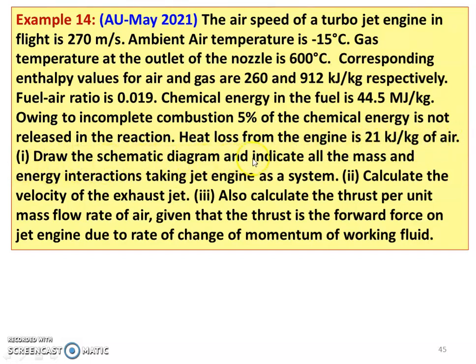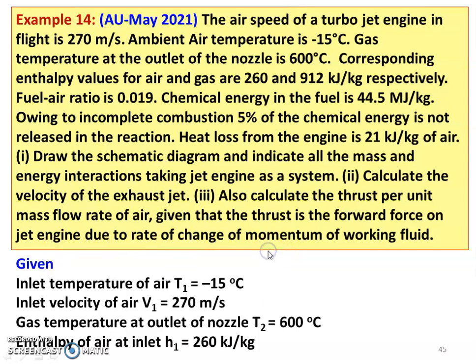Draw the schematic diagram and indicate all mass and energy interactions taking the jet engine as a system. Calculate the velocity of the exhaust jet. Also calculate the thrust per unit mass flow rate of air. Given that the thrust is the forward force on the jet engine due to the rate of change of momentum of the working fluid. After reading the problem, we have to write the given data.